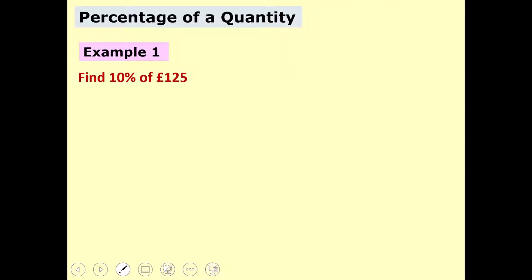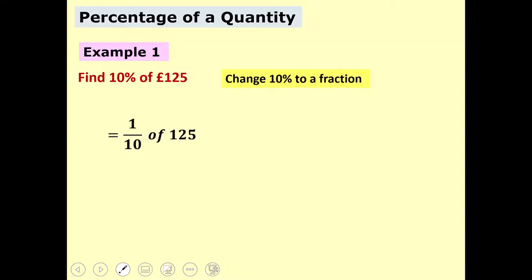We've been asked to find 10% of £125. The first thing we're going to do is change our percentage into a fraction. Using the table we've just copied down, or your previous knowledge, you know that 10% is one tenth. So we're essentially going to be finding one tenth of 125, and to find one tenth we divide by 10.